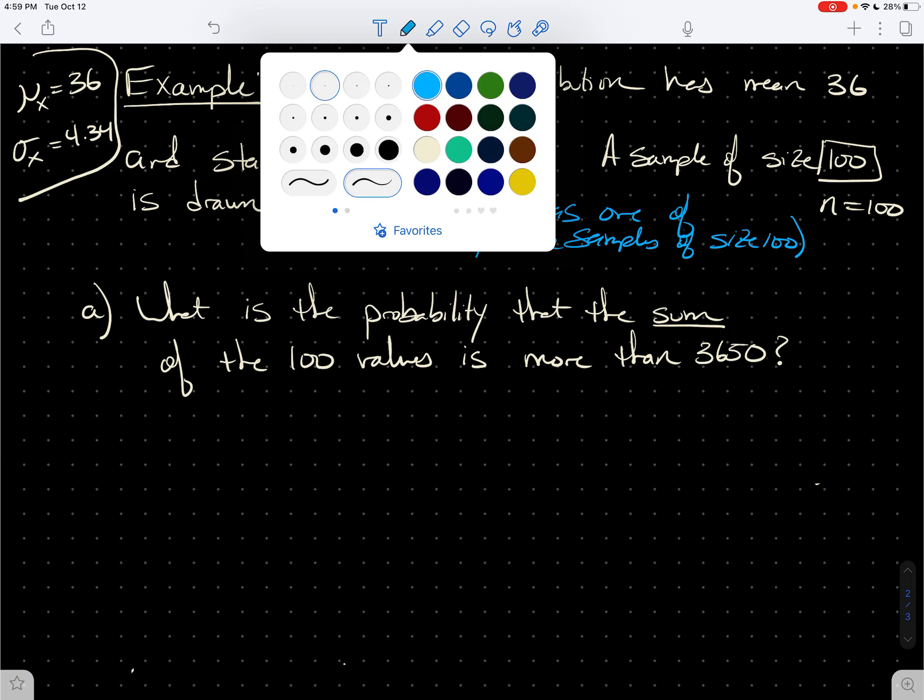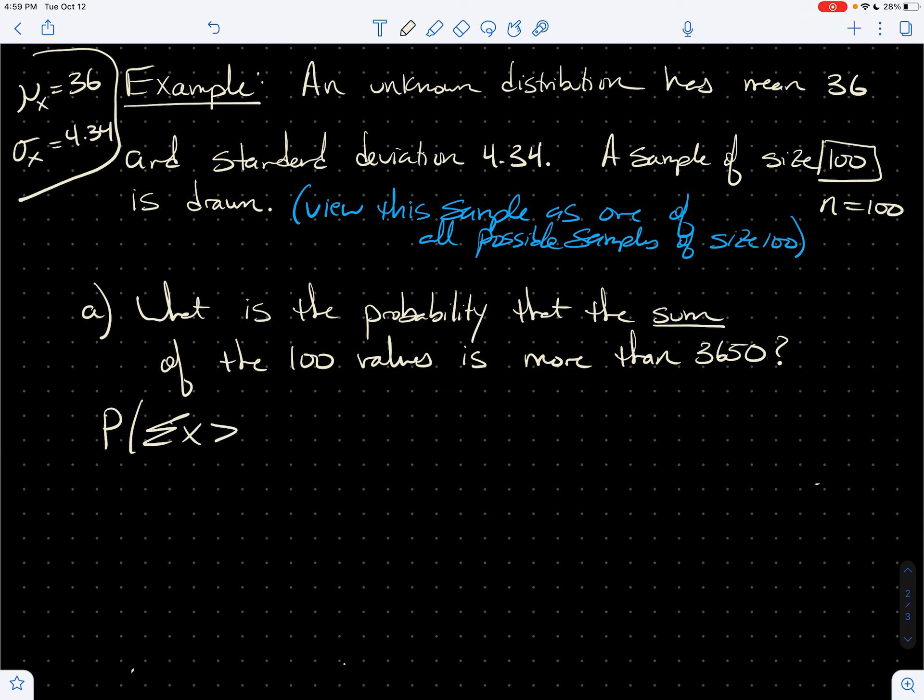So I'm really asking, what's the probability that sigma x is greater than 3650? Well, we need to realize that sigma x is normally distributed. And its mean is the sample size 100 times the original mean, which is 36.